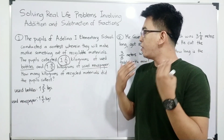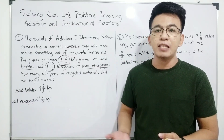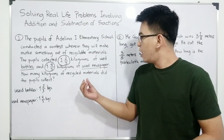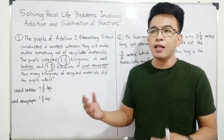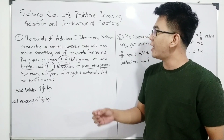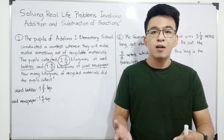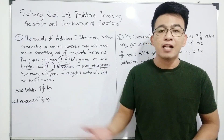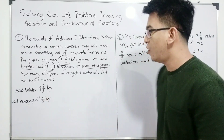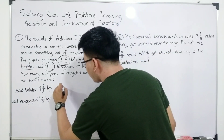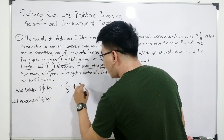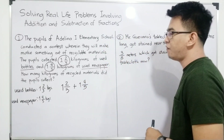Since the question asks for how many kilograms of recycled materials were collected in total, we will use addition because we need to find the total or the sum of the kilograms of the recycled materials. So what we will do is use addition. We will add these two mixed numbers: 1 and 2 thirds plus 1 and 4 over 5 kilograms.